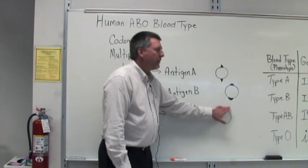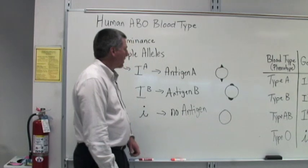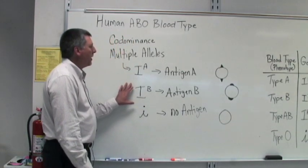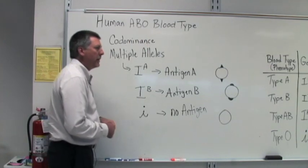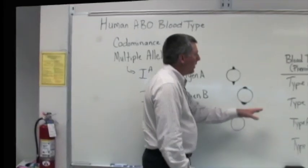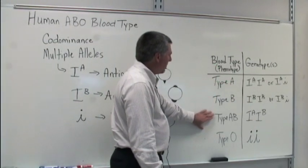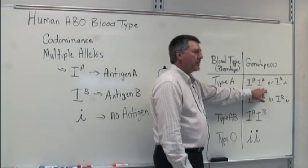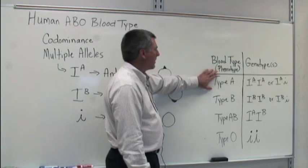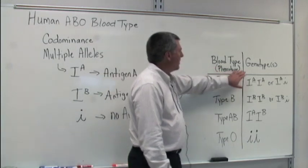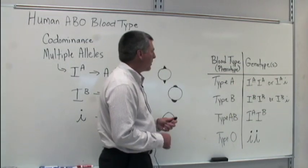The little i allele doesn't code for an antigen like antigen A or antigen B. I've drawn a red blood cell here that doesn't have an antigen displayed on its surface. So three different alleles are involved with determining the human ABO blood type. I've created a little chart here that lists the different human blood types and shows the genotypes that are available. Blood type would be the phenotype, or the physical characteristic in this situation, and then the genotypes are which combination of alleles the individual might have.